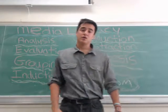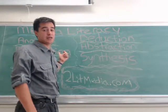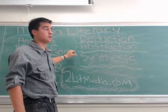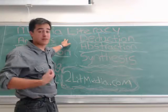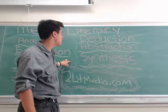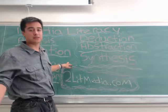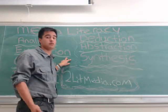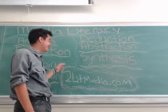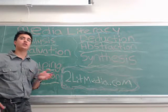Deduction is similar in that you're reaching conclusions, but it works differently. The structure is: if A then B, conclusion C — they have to follow each other logically. For example: my friend Tash is a bachelor; all bachelors are unmarried; therefore Tash is unmarried. Because of the definition, he can't be a bachelor and be married. That's deduction.